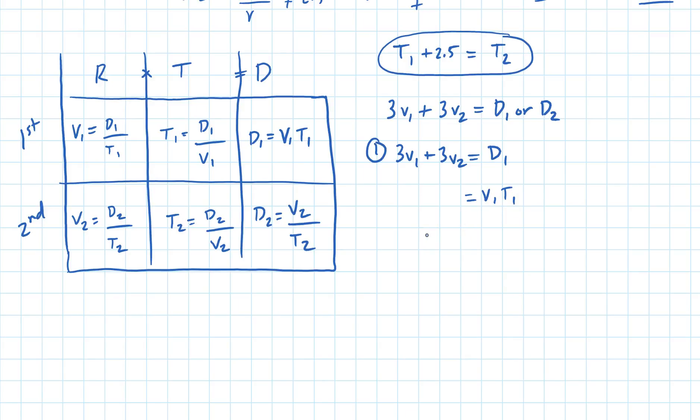And for the second one I did 3 times V1 plus 3 times V2 equals D2, and I said D2 was equal to V2 times T2.